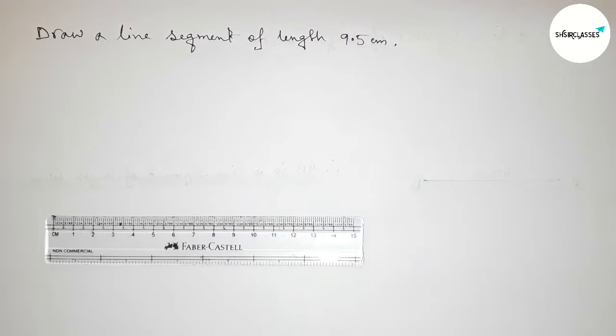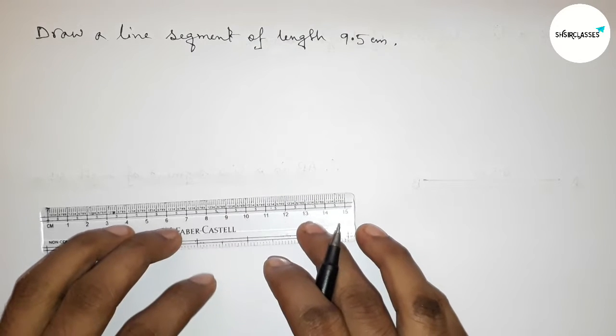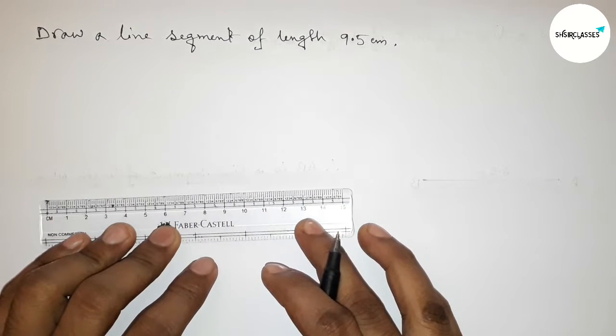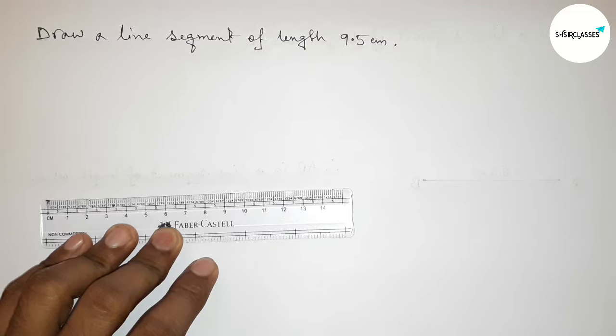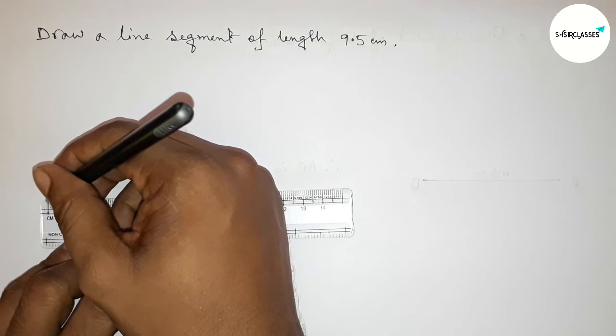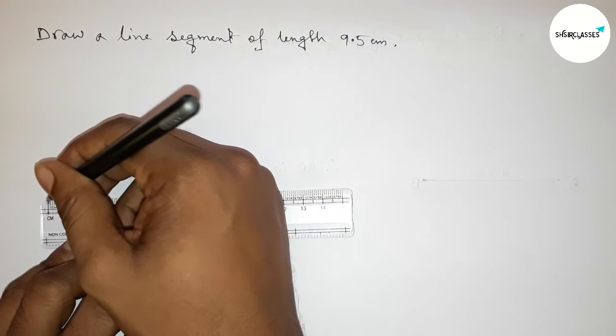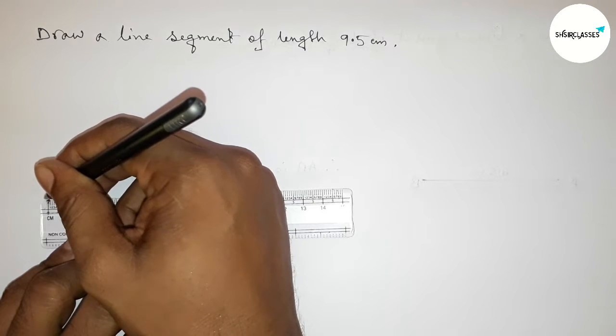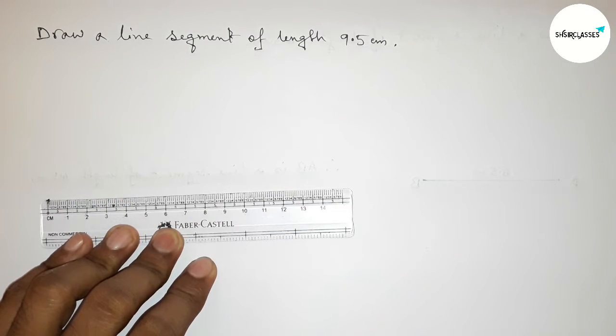So let's start the video. First of all, with the help of the scale, putting the scale here perfectly, then counting the length 9.5 centimeter. So first, this is the starting zero, so marking here zero, then counting.